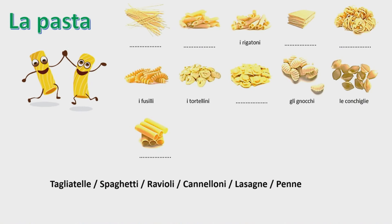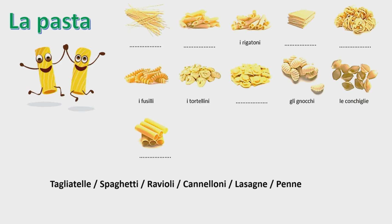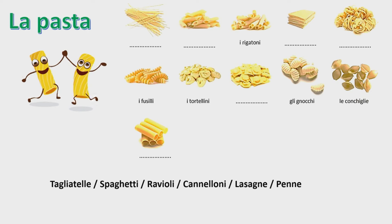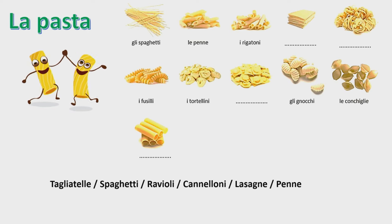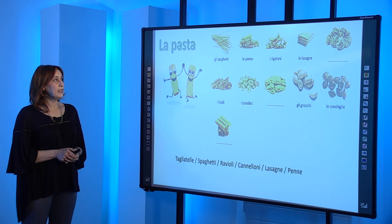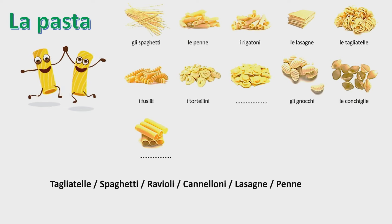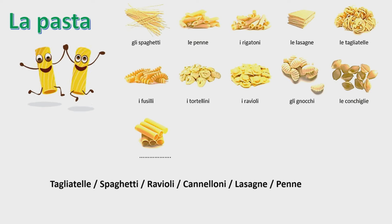Qui avete alcuni esempi di pasta. Bisogna completare con parole della lista: tagliatelle, spaghetti, ravioli, cannelloni, lasagne e penne. La prima foto, molto facile, sono gli spaghetti. Poi abbiamo le penne, i rigatoni e le lasagne. La foto seguente si tratta delle tagliatelle, i fusilli, i tortellini. Cosa rimane nella lista? I ravioli, gli gnocchi e le conchiglie. Questi sono alcuni esempi di pasta.